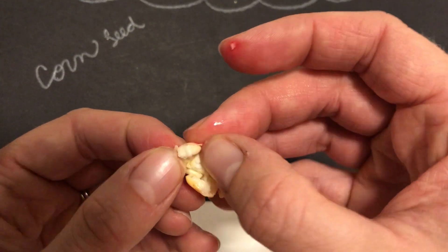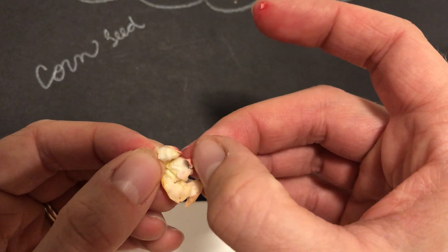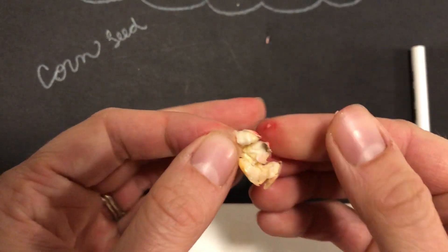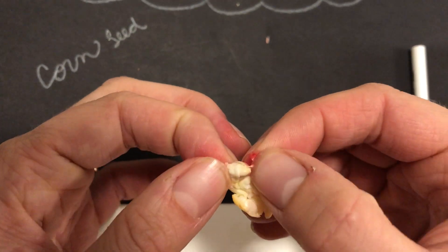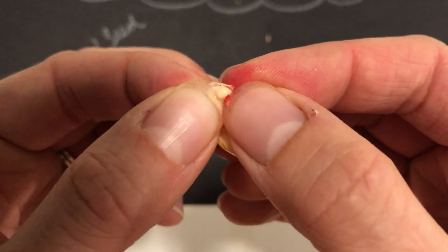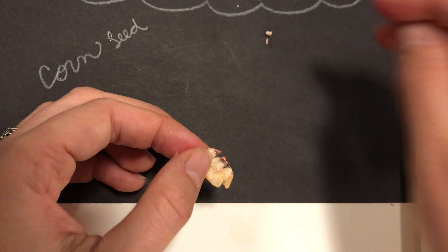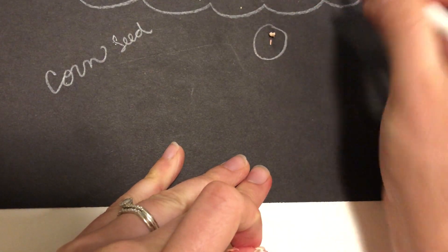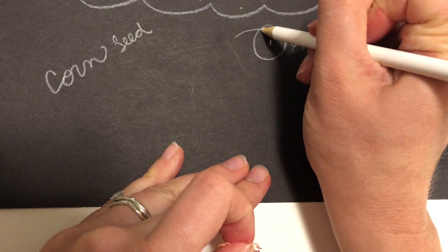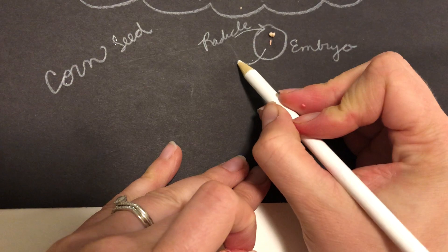You'll see right here one part of the embryo of the plant. That right there is our plumule. And then right here, it's a little hard to see, that's our radicle. So those two pieces together create the embryo — with the radicle and the plumule.